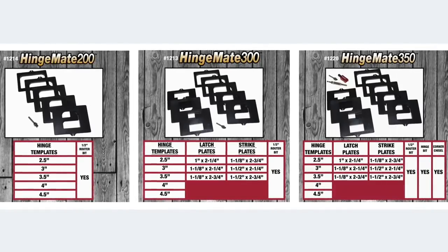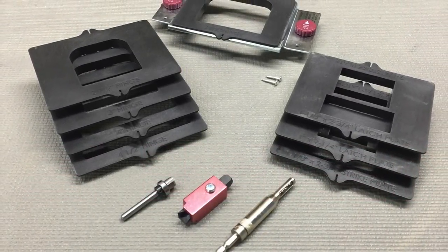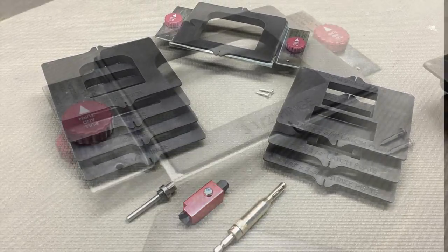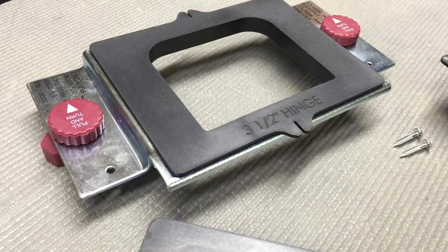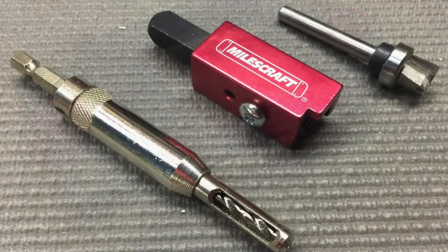If you are looking for a slight upgrade, you can purchase the 1220 Hingemate 350, which will include everything that is in the 1213 model, but comes with a hinge bit and a corner chisel as well.